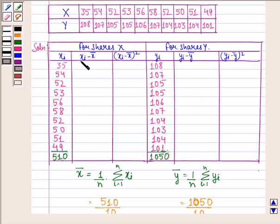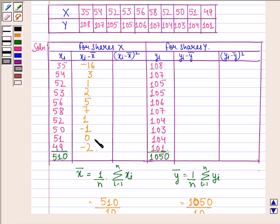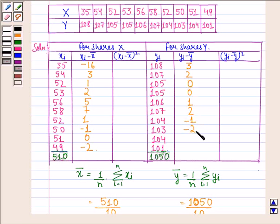Now we compute the deviations Xi minus X-bar for share X. The values are: minus 16, 3, 1, 2, 5, 7, 1, minus 1, 0, minus 2. Similarly for share Y, the deviations Yi minus Y-bar are: 3, 2, 0, 0, 1, 2, minus 1, minus 2, minus 1, minus 4.